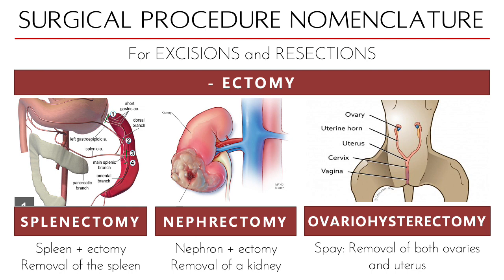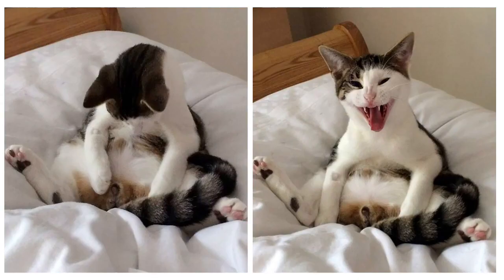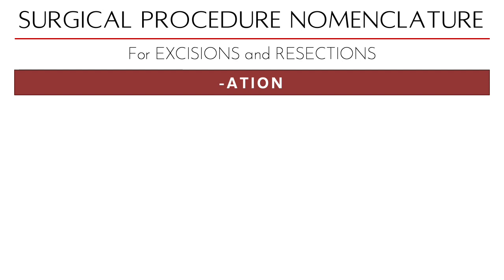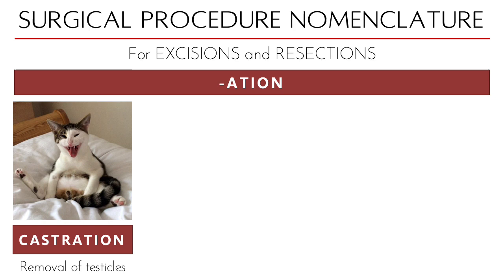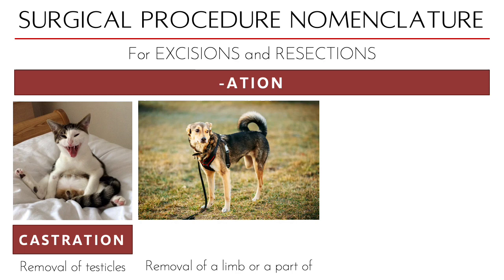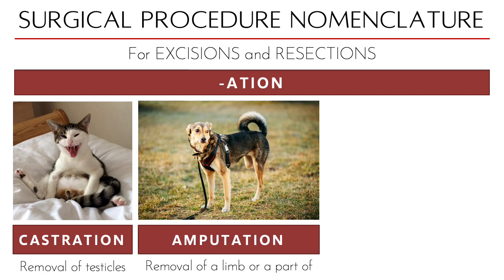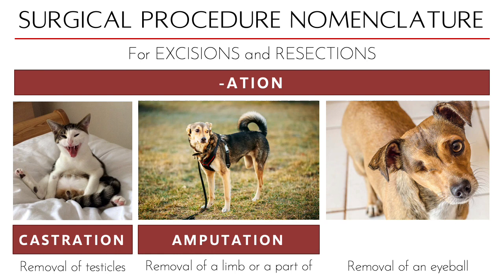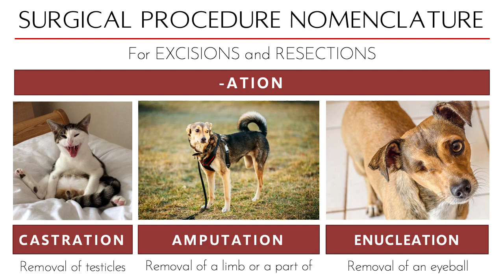Sometimes we remove things but the procedure name doesn't end with '-ectomy.' For example, there are other ways to name a surgical procedure. The removal of testicles is called castration. What if we remove a limb or a part of a limb? That is called amputation. What if we remove an eyeball? This is very common for dogs after a dogfight or if they have a tumor or infection in their eye — that procedure is called enucleation.